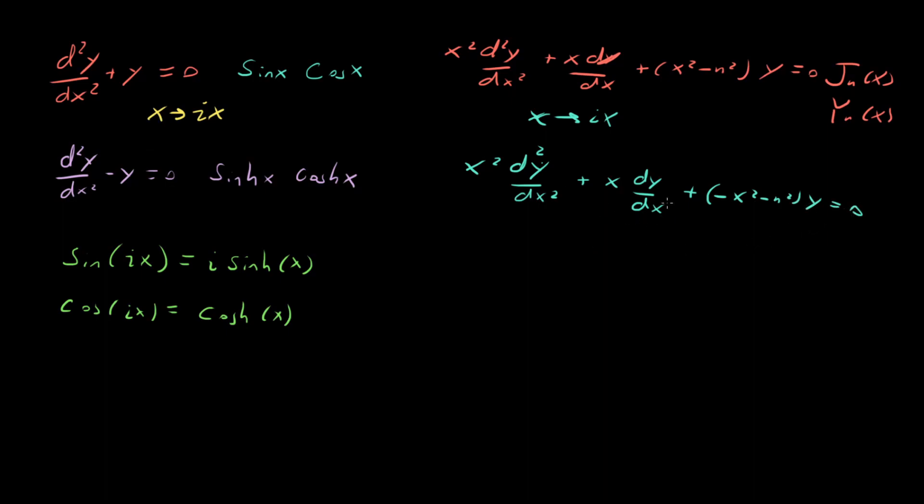So this is our modified Bessel equation. We got it from taking x from the original Bessel equation and having it go to ix. So now that we have this equation, what are the solutions to this?